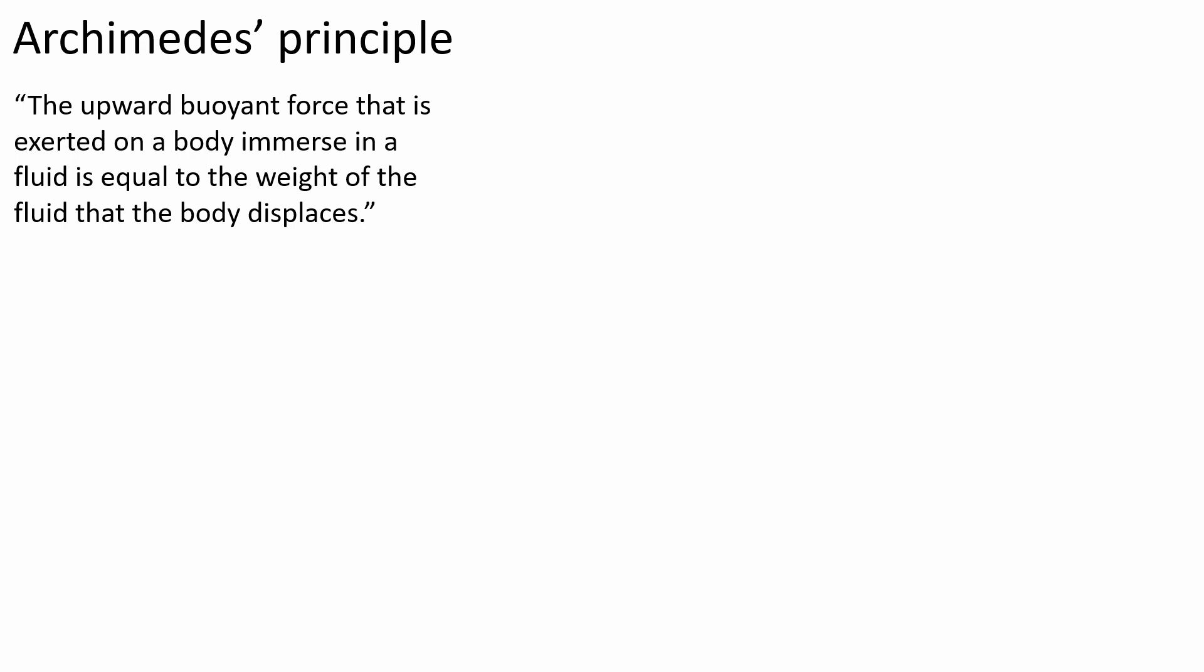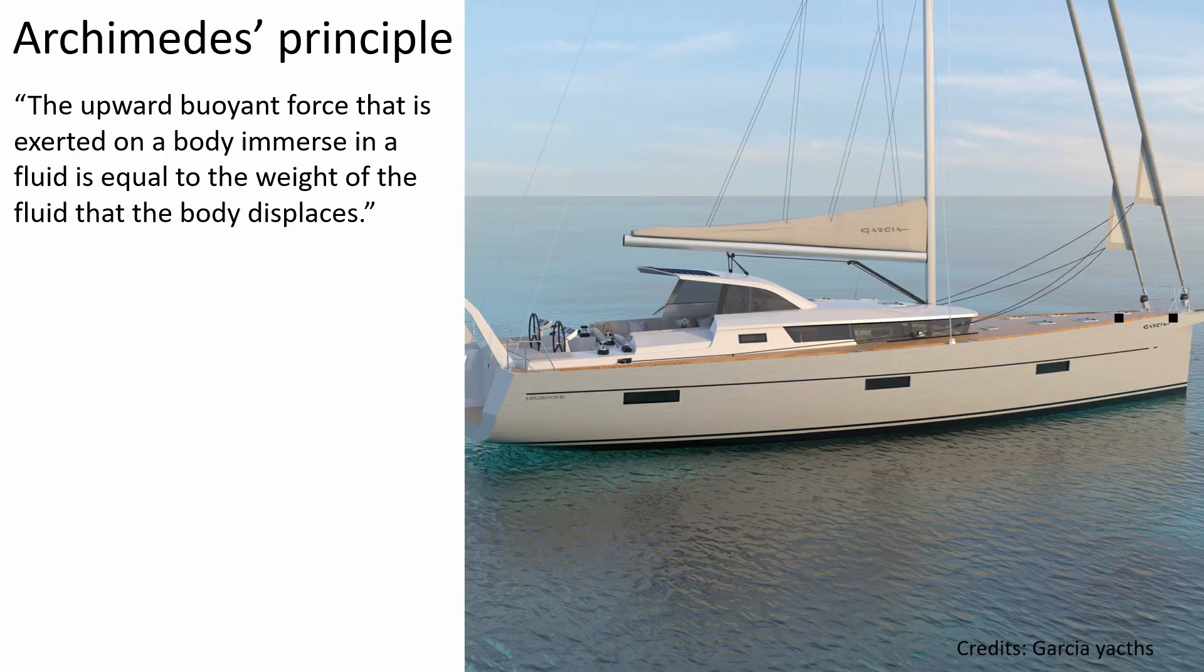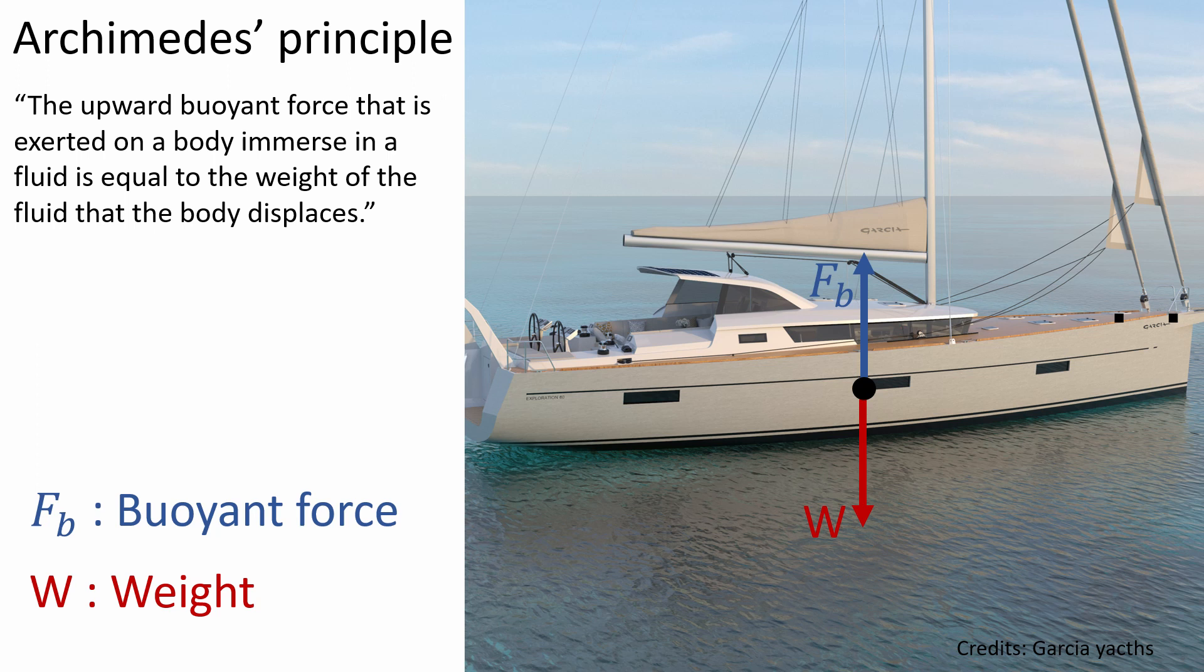For example, it's fundamental to understanding why a boat doesn't sink despite its extremely high weight. A boat displaces a huge amount of water, creating a force to counterbalance its weight. To compute the buoyant force, apply this formula where rho represents fluid density, g is acceleration due to gravity, and v is the volume of displaced fluid.